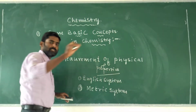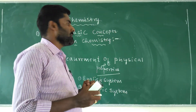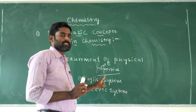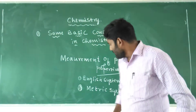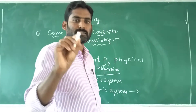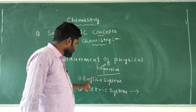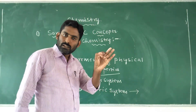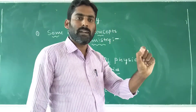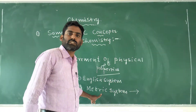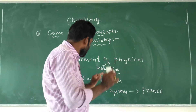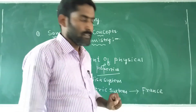To measure the quantitative properties of matter across the world, the English system and metric system were used worldwide. The metric system was the most convenient system for measuring properties of matter. The metric system was first originated and used in France.